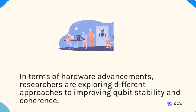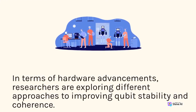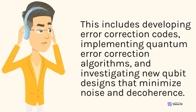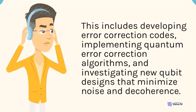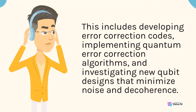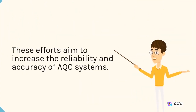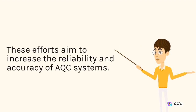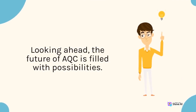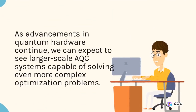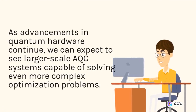In terms of hardware advancements, researchers are exploring different approaches to improving qubit stability and coherence. This includes developing error-correction codes, implementing quantum error-correction algorithms, and investigating new qubit designs that minimize noise and decoherence. These efforts aim to increase the reliability and accuracy of AQC systems. Looking ahead, the future of AQC is filled with possibilities. As advancements in quantum hardware continue, we can expect to see larger-scale AQC systems capable of solving even more complex optimization problems.